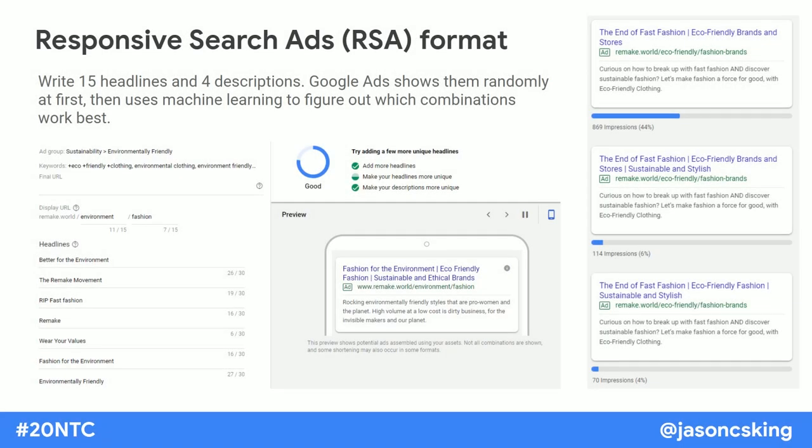There's an ad format called a responsive search ad — I absolutely recommend using this. It doesn't tend to perform very well at first as it's machine learning, but it performs better over time. Unlike a normal ad with three headlines and two descriptions, you write 15 headlines and four descriptions, and Google Ads shows these randomly. Over time it figures out which combinations perform best and shows those more often. It can take up to three months for responsive search ads to really start excelling and beating other ads — you're in it for the long game.